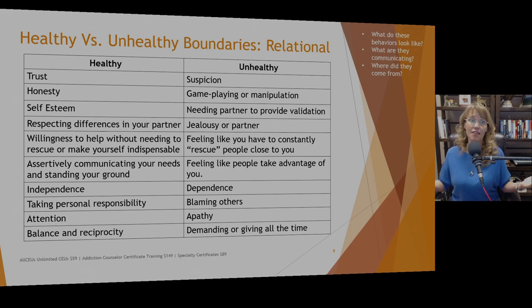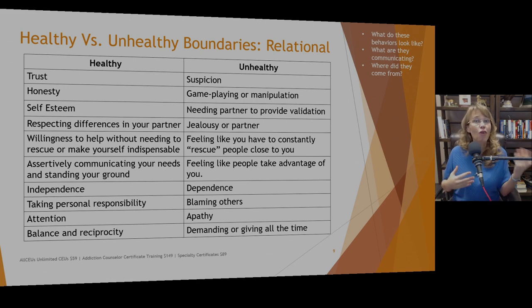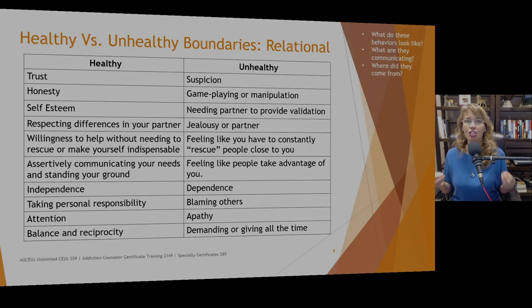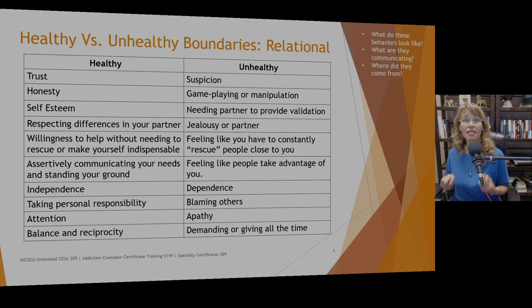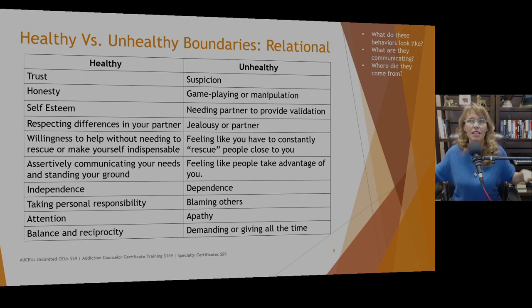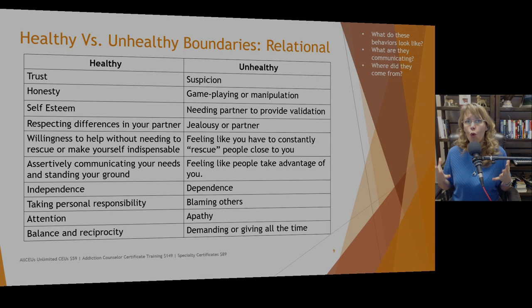Relational boundaries are the most discussed type of boundary. Healthy relational boundaries involve trust versus suspicion — generally you want to be in a relationship where almost all the time you trust the other person. An occasional suspicious thought doesn't necessarily indicate bad boundaries. When people are lacking in trust, I want to know where that comes from — what happened that made them feel insecure? It could be low self-esteem and fear of rejection, or baggage from prior relationships.